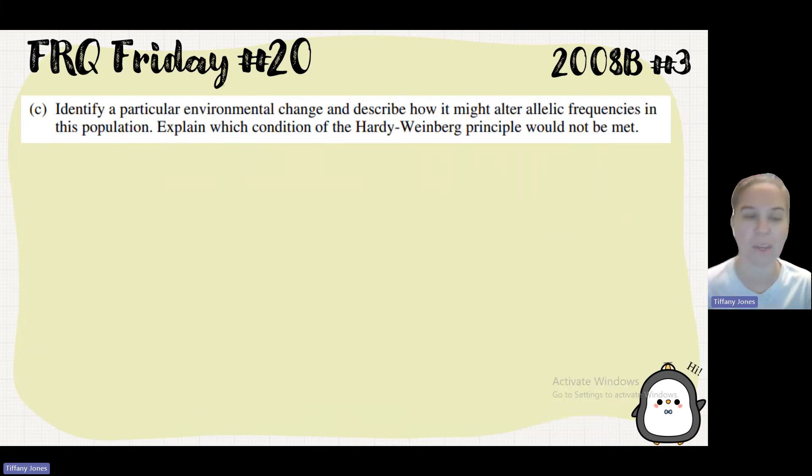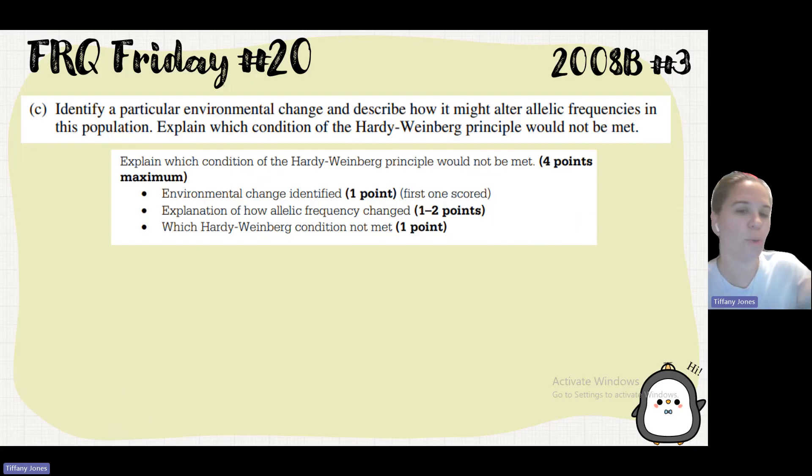So part C says identify an environmental change and describe how it might alter allele frequencies in that population. Explain which condition of Hardy-Weinberg principle would not be met. So this is just asking you to come up with a change and then describe how that change alters the frequencies. And then which of those five conditions isn't being met. So as long as you identify that change, you give them the explanation of how the allele frequency changes, and then also talk about that condition, you can get points here.